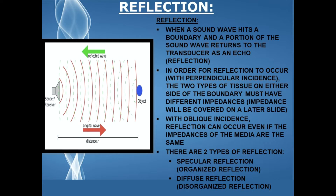In order for reflection to occur with perpendicular incidence — and remember that perpendicular incidence is when a sound wave strikes a boundary at a 90 degree angle — the two types of tissue on either side of the boundary, medium 1 and medium 2, must have different impedances. Impedance is the resistance that a sound wave encounters as it passes through the tissue, and it determines how much reflection occurs when the sound wave strikes the boundary.